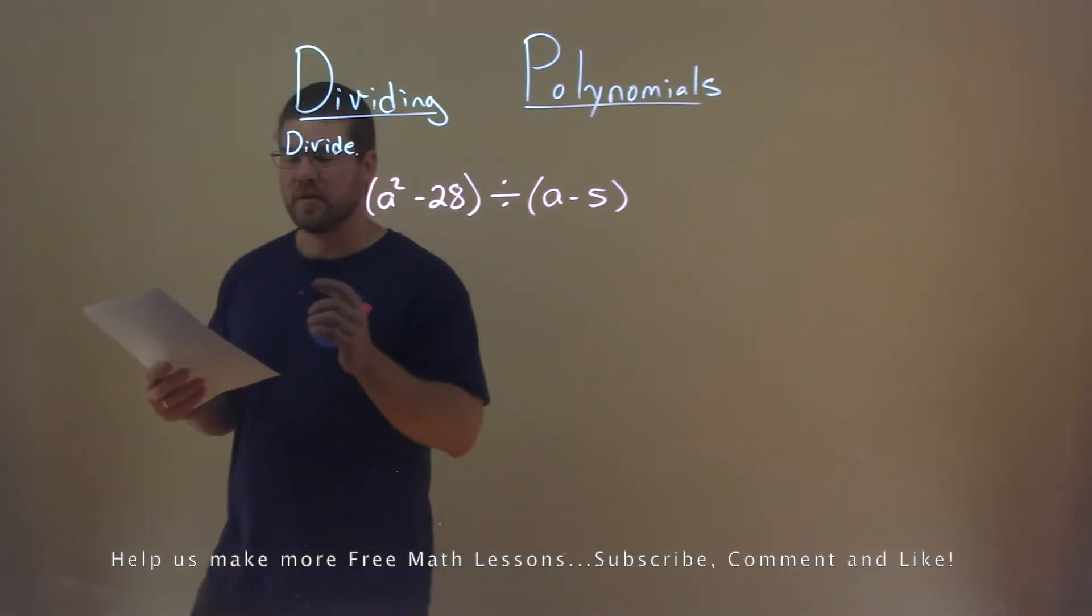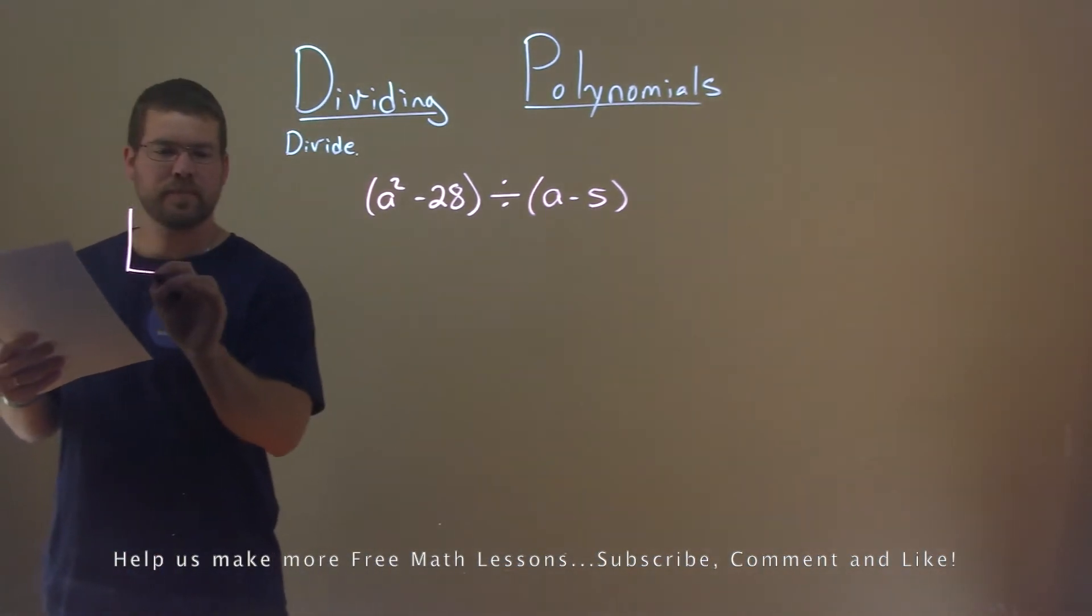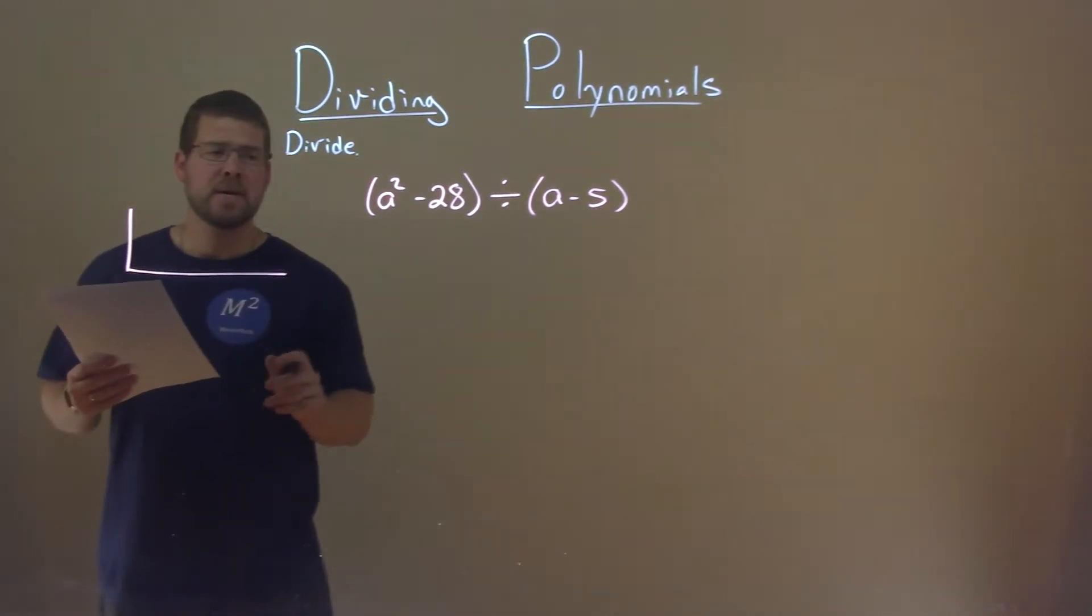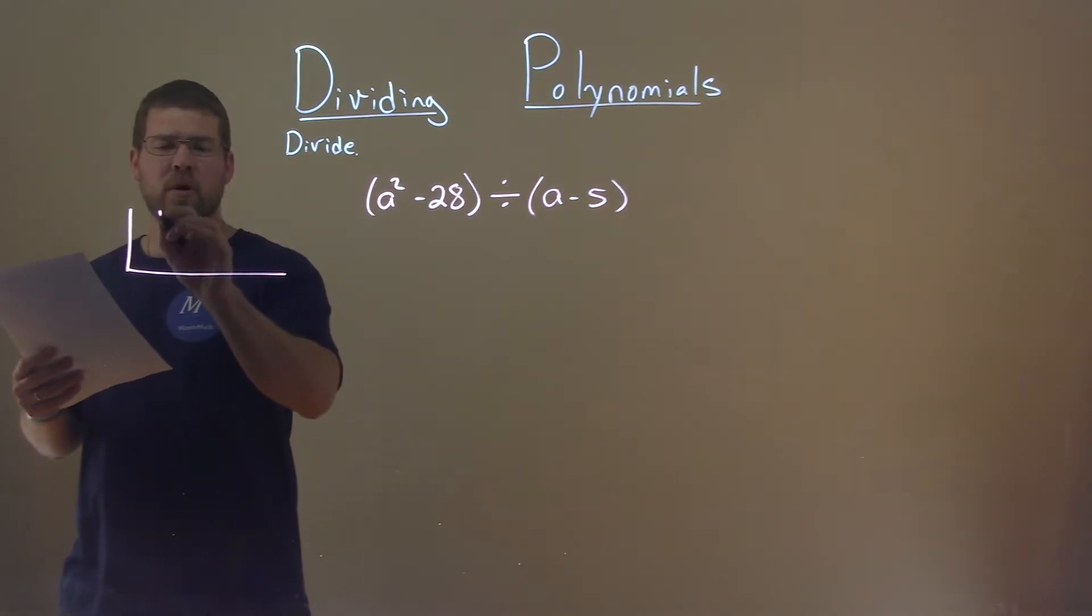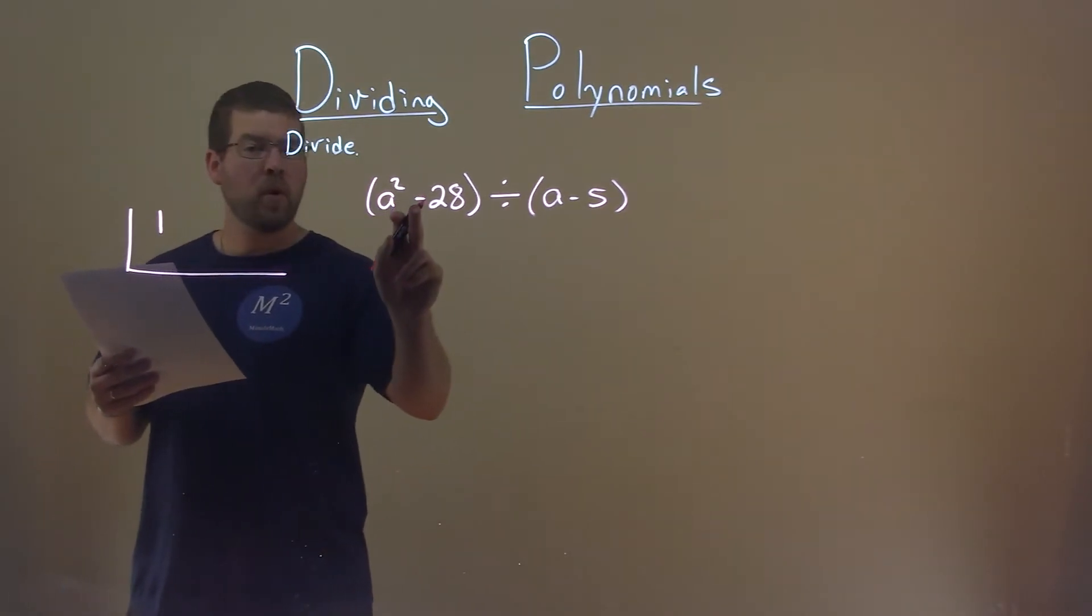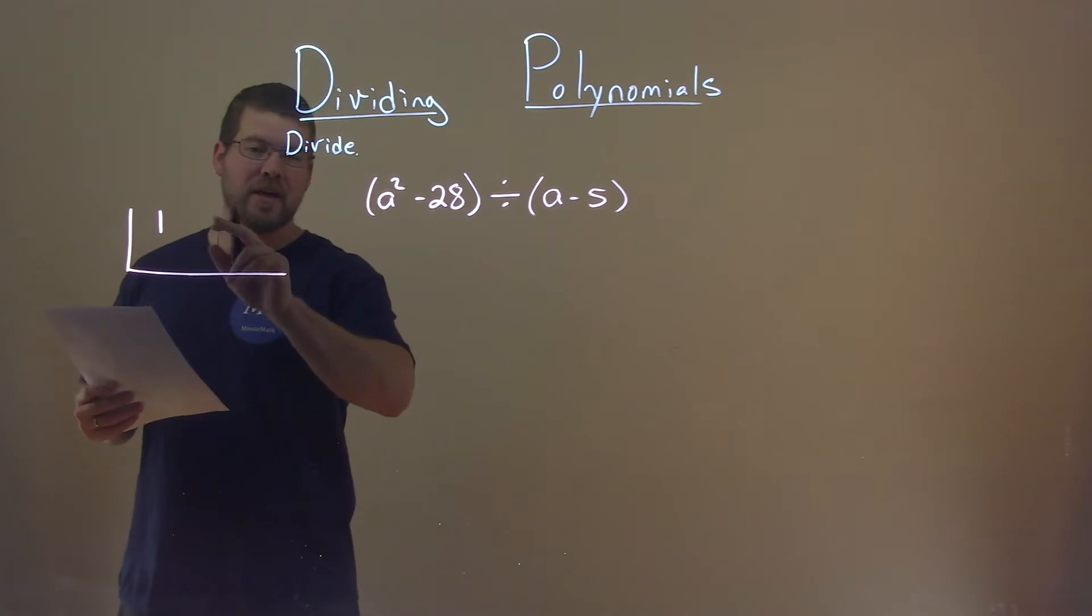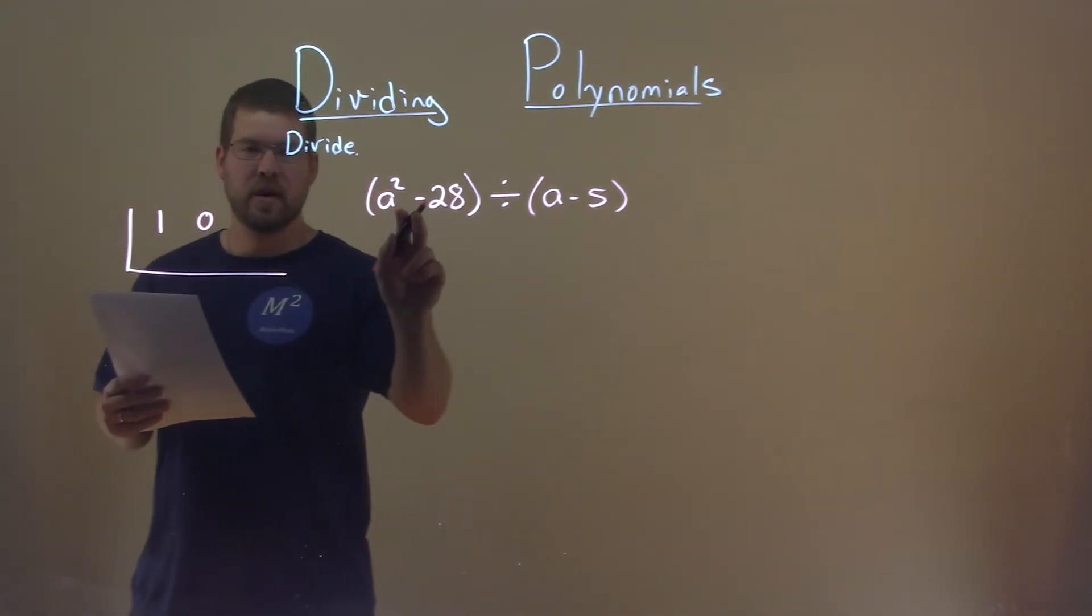Well, let's use synthetic division, but we have to be careful. Okay? Well, let's set it up here. Coefficient in front of a squared is a 1. Now, we don't have an a written, but it needs to have a place value here. So that's going to be a 0a inside of here.